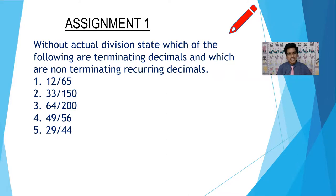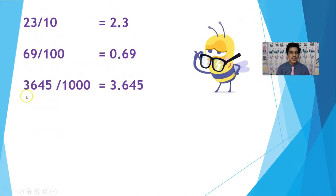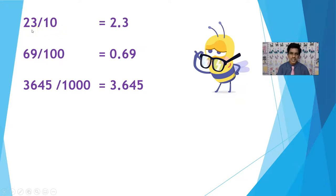Using theorems 1.3, 1.4, and 1.5, let us discuss some other problems. Consider these rational numbers: 23 by 10 is 2.3, 69 by 100 is 0.69, and 3645 by 1000 is 3.645. When the denominator has 10, put a decimal after one digit from the right; for 100 put it after two digits; for 1000 after three digits.